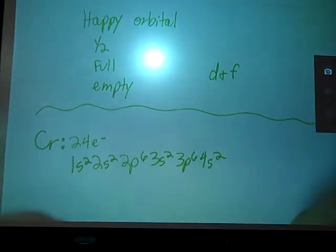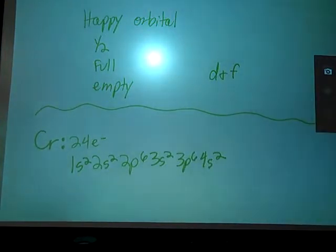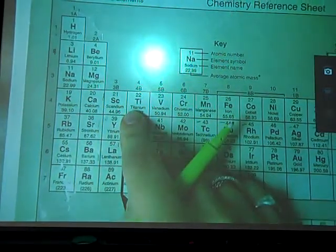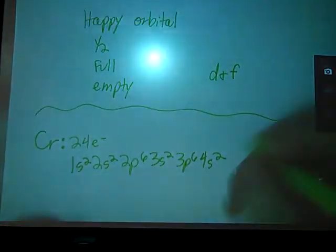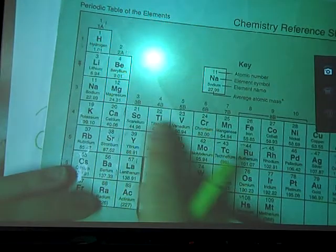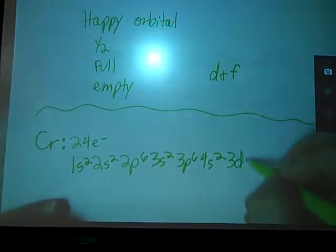And then remember, we're filling these in order of lowest to highest energy. And so you would think that on the fourth row, we just went through the S, that 4D would be the next lowest in energy, but in fact it is 3D. And since we're doing chromium, 1, 2, 3, 4, D4.